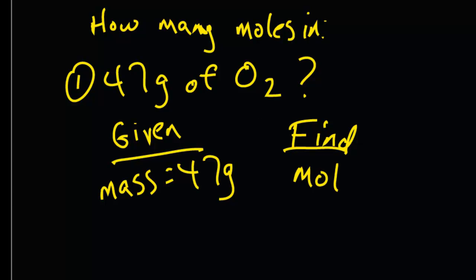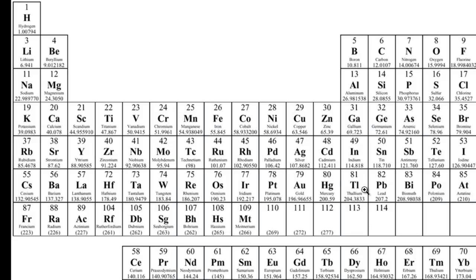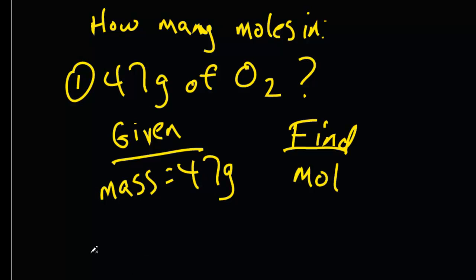The fact that this is O2, can you look on the periodic table and write down any more information about it? Sure you can. Because we know that the atomic weight of oxygen is 15.9994, so that the molar mass of oxygen must be 2 times 15.9994.